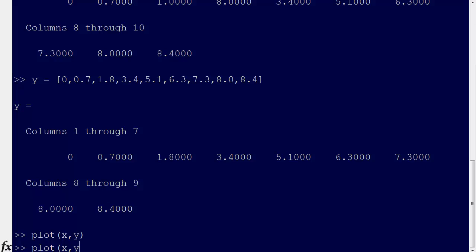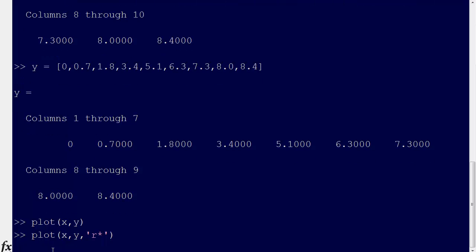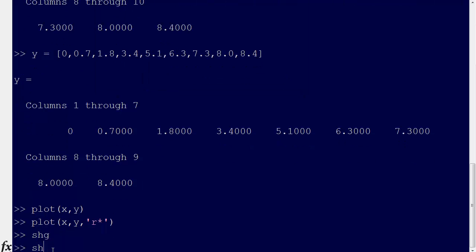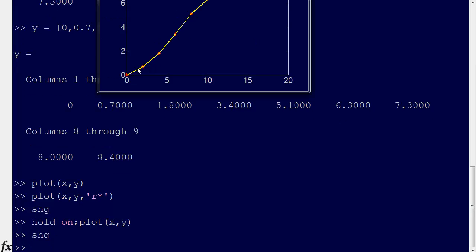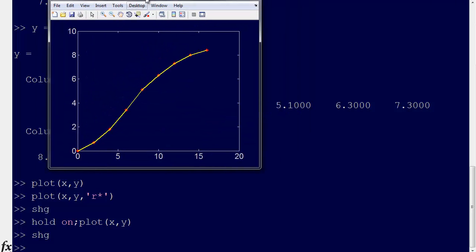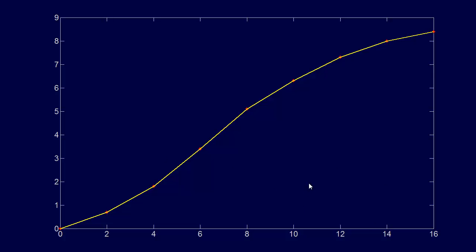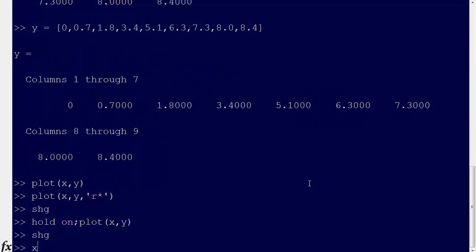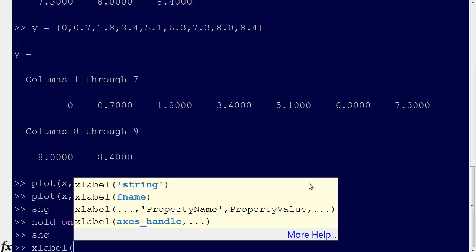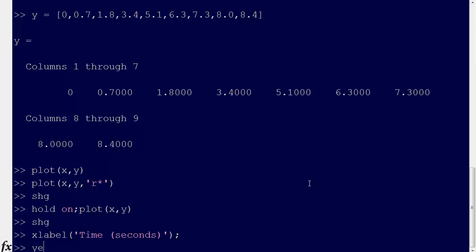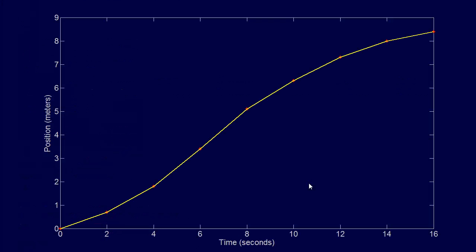We can say plot x, y with red stars. This is the trajectory that we have, and I forgot that you couldn't see this as well as I can. There we go, so this is the trajectory that we got, and we can label it. We could go x label 'time in seconds', and then y label 'position in meters', and that gives us our labels.